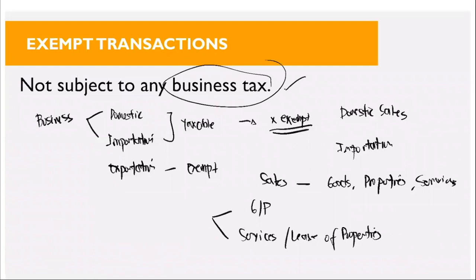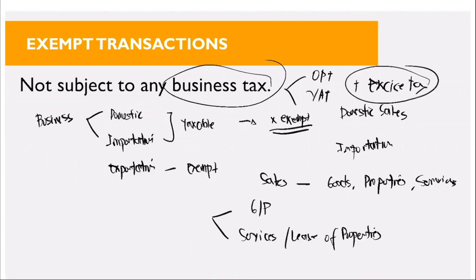When we say sales, this pertains to the sale of goods, properties, or services. We already classified sales as either the sale of goods or properties, or the sale of services or lease of properties, and we discussed their tax basis — gross selling price or gross receipts. An exempt transaction means we will not subject it to any business tax, whether OPT, value-added tax, or excise tax.